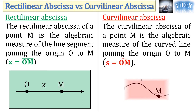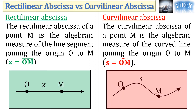The curvilinear abscissa S of a point M is the algebraic measure of the curved line joining the origin O to M. Thus, the rectilinear abscissa is an algebraic measure of a line segment, while the curvilinear abscissa is an algebraic measure along the curve.